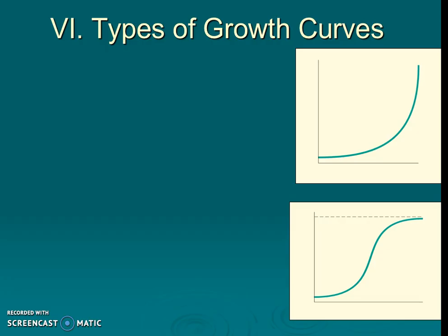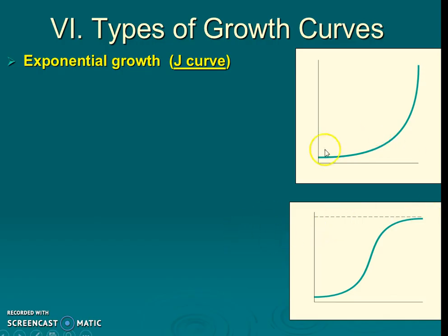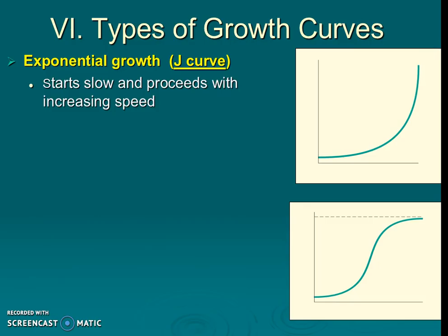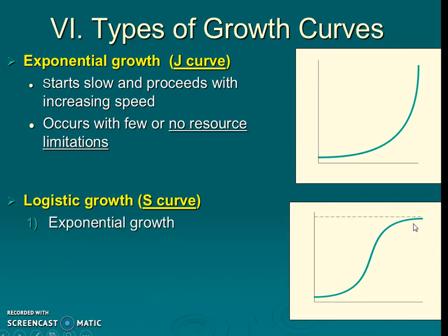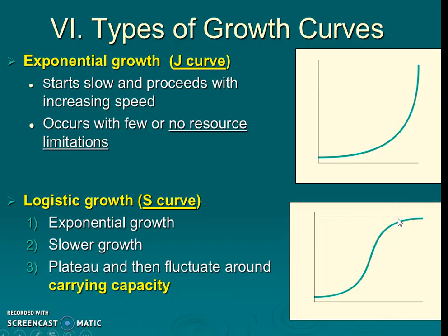In reality, humans appear to follow a different type of growth curve — one that seems to go on forever, rather than leveling out at carrying capacity. The curve shaped like a J is called the J-curve, also known as exponential growth: it starts slow but grows faster and faster. This scenario doesn't really make sense in practice because it assumes no resource limitations, and Earth is a closed system with limited resources. The logistic growth curve — the S-curve — does incorporate carrying capacity. After an initial period of exponential growth, it slows down and levels off, wiggling around carrying capacity based on limited resources.